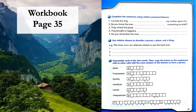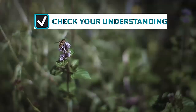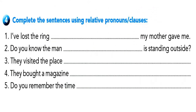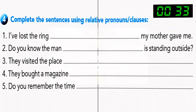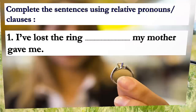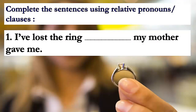In your workbook page 35, let's check your understanding with exercise 4. Complete the sentences using relative pronouns or clauses. Number one: I have lost the ring _____. The ring is a thing, so we use 'which.' I have lost the ring which my mother gave me.